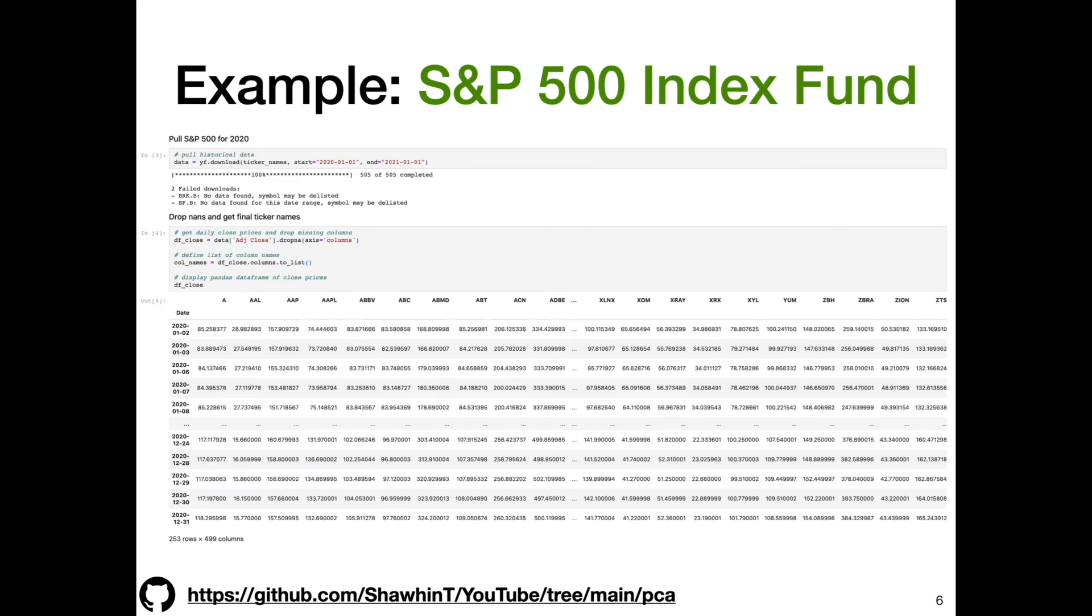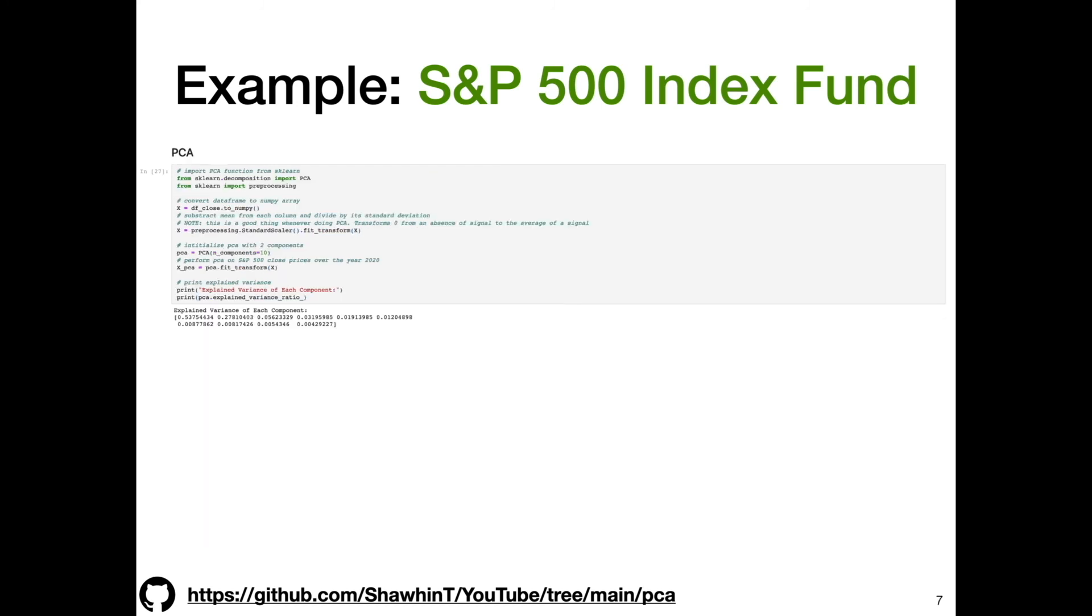Then I pull S&P 500 data for 2020, drop NaNs, get a pandas dataframe of just close prices as opposed to all the other information that's available, get a list of ticker names of all the companies in the dataframe. We have 253 rows and 499 columns.